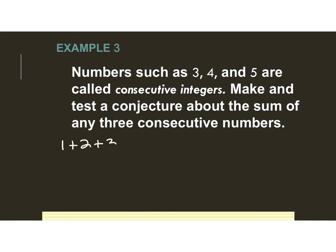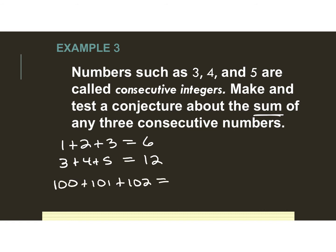Let's take the first three: 1, 2, 3. When I add those, I get 6. Then using the numbers from the problem, 3 plus 4 plus 5 gives me 12. Let's try a bigger set starting at 100: 100 plus 101 plus 102 gives me 303.